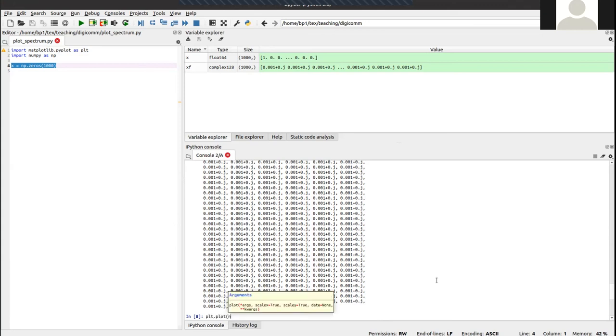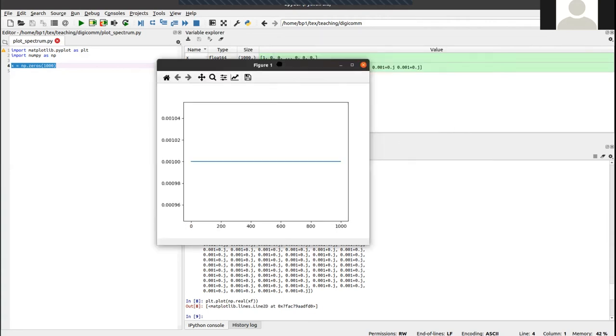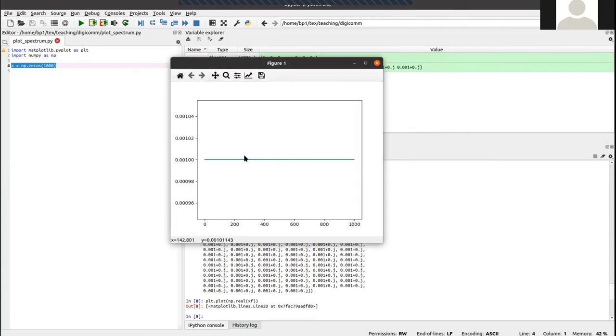plt plot numpy real of xf. Where's the figure? There's the figure. So we see here getting a nice constant DC value out of that. But that's what we wanted to have for the very first coefficient.